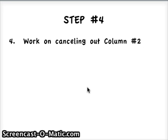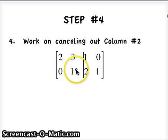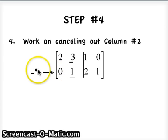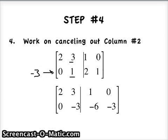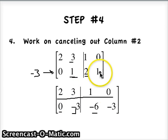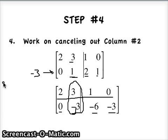Step number 4: we're going to work on canceling out column number 2. We already canceled out column number 1. We have a 3 here and a 1 here. In order to cancel this out, we need a negative 3 in row 2, so we multiply that entire row by negative 3. Row number 1 stays the same. For row number 2: 0 times negative 3 is 0, negative 3 times 1 is negative 3, negative 3 times 2 is negative 6, and negative 3 times 1 is negative 3. We're only worried about column number 2 canceling when we add the two rows together.